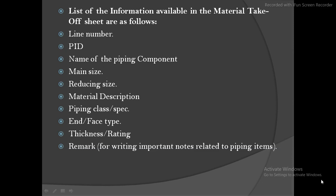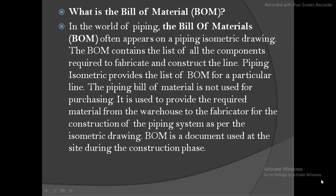Now, what is the Bill of Material? In the world of piping, the Bill of Materials often appears on the piping isometric drawing. The MTO and the BOM are both different things - don't get confused. MTO is used to purchase a product before your site work gets started; it should be stored on site four months before site work begins. The Bill of Material comes on the isometric when you extract one or two lines at a time.